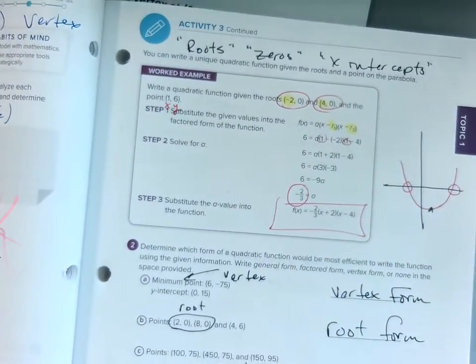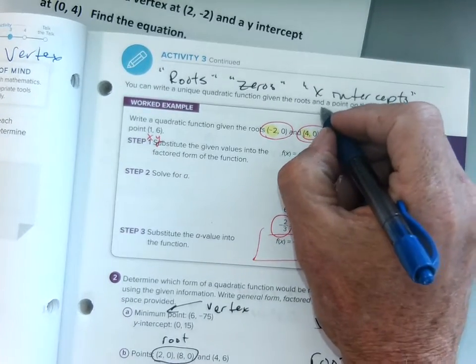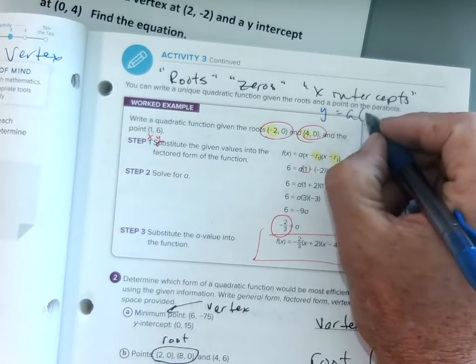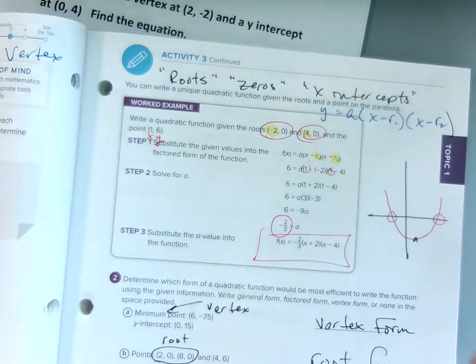Then, on the next one, we're given roots. So we had our root form, which is, again, I'll rewrite: y equals a times (x minus r1). That's our first root. (x minus r2). That's our second root.